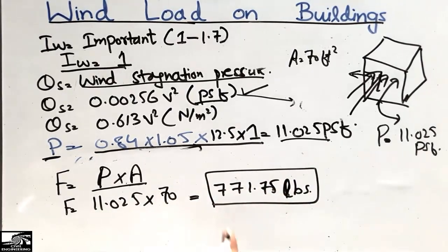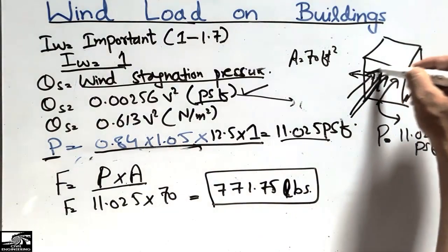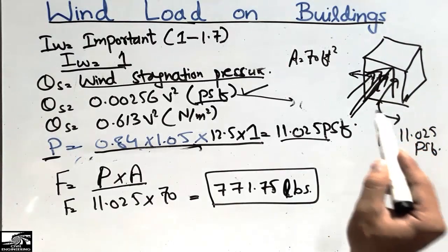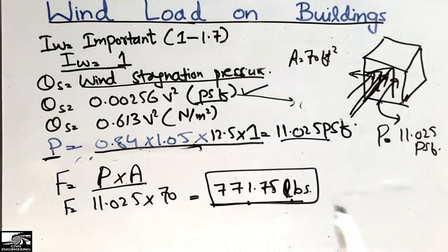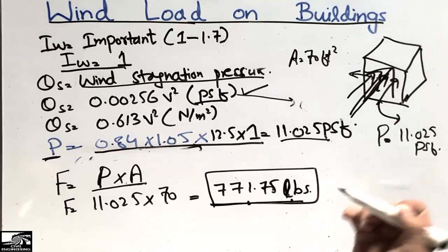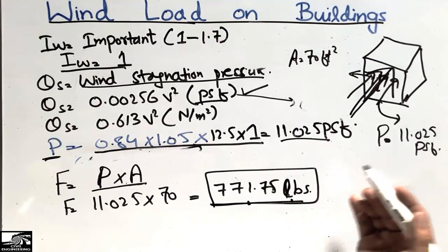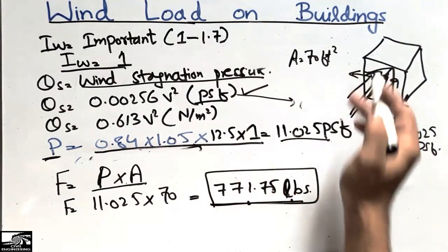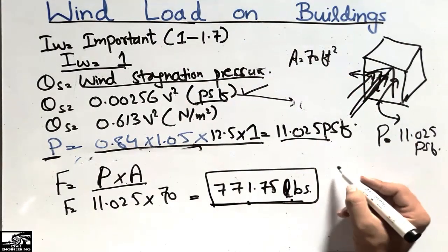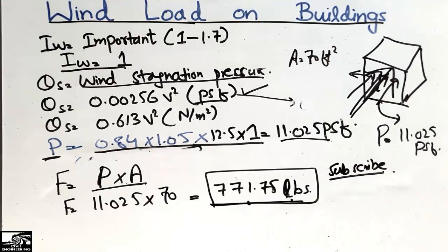So approximately 772 pounds of wind force is acting on this building as a lateral load. We must design this building to resist this load; otherwise the building will not resist the wind and will collapse. That was all about wind load on buildings — don't forget to subscribe to our channel for daily Seven Engineering videos. Thank you for watching.